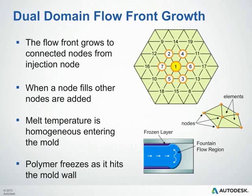For dual domain, the flow front grows to connecting nodes from an injection cone. If you look at the image on the right, the number one dot in yellow is where our injection cone is — that fills first. Then naturally we grow outward to nodes 2, 3, 4, 5, 6, and 7. As those fill, the surrounding ones fill, and so on. One thing to note is that the melt temperature is homogeneous entering the mold — you tell us what the melt temperature is and that's how it enters the injection location. We're also assuming that the polymer freezes as it hits the mold wall.